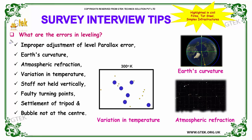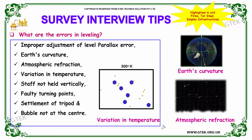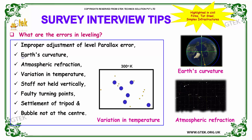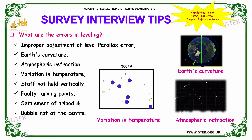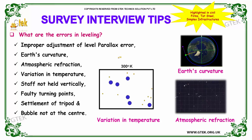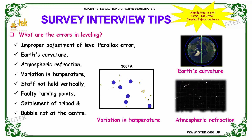Improper adjustment of level gives parallax error. The next error is earth's curvature. Atmospheric refraction can also be an error in leveling. Variation in temperature can cause errors in leveling. If the staff is not held vertically, that leads to an error. Faulty turning points will lead to error in leveling. Settlement of tripod and bubble not being in the center form a majority of errors in leveling.